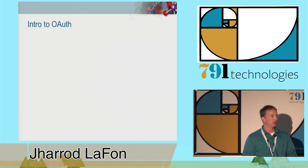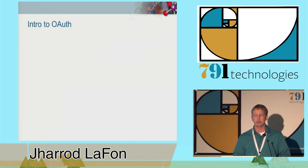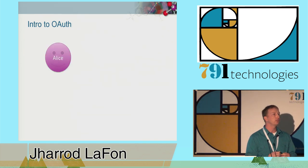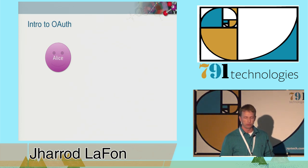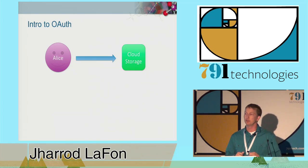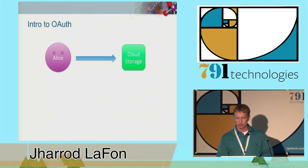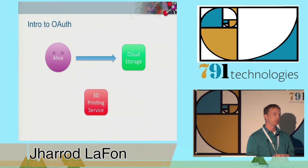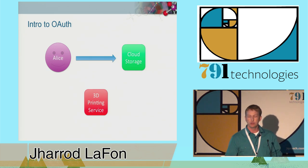In order to understand OAuth, it's useful to understand the problem that it's trying to solve. Let's say we have a user—we'll call her Alice—and Alice is an engineer that designs parts in 3D, and she stores those designs in a cloud storage service. Occasionally, Alice needs to print those designs out using a 3D printer, but she doesn't own one.